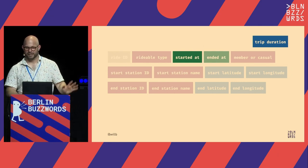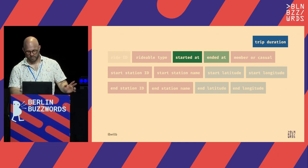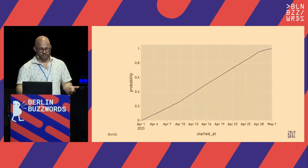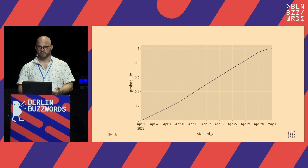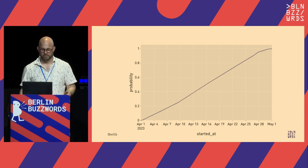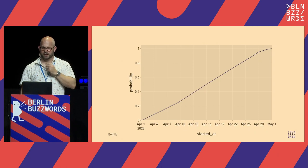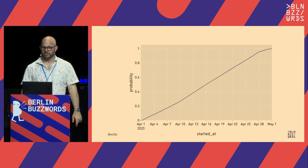Instead, if we derive trip duration from start and end times, we can model something more meaningful by modeling when start times happen and how long trips are. Some of you may have already noticed there was a trip duration field earlier — thank you for not calling me out on it. By modeling trip duration, we can more faithfully talk about what's actually happening here.